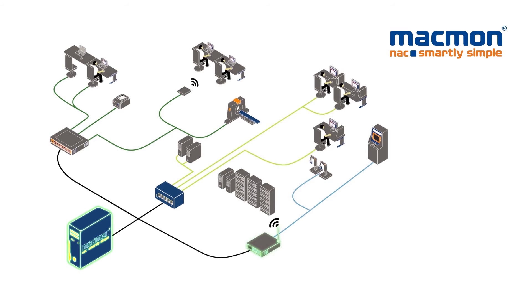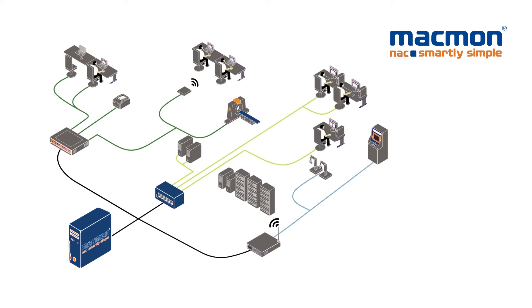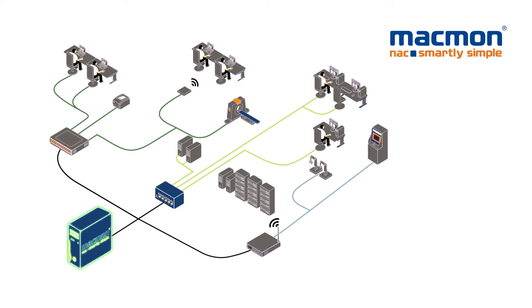Let's take a look at some of the other uses of NAC. If, for example, an employee moves internally within the company, taking the device he usually works on with him, thanks to Macmon his VLAN will also move with him. He will therefore automatically have the same access rights as before and be able to access the same resources at his new workstation.